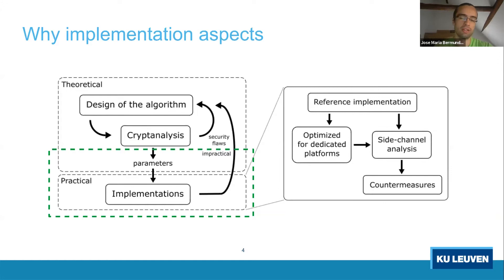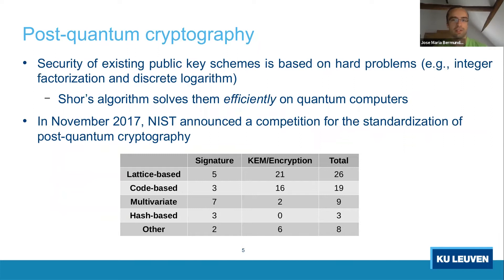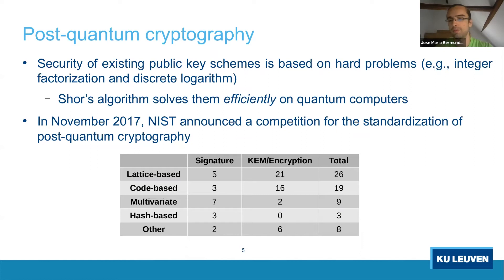Now I will introduce the field of lattice-based cryptography. But first, what is lattice-based cryptography? We have existing public key schemes — RSA, elliptic curve, and digital signatures — that are based on number-theoretical problems such as prime factorization or the discrete logarithm. The problem with these algorithms is that once we have a quantum computer large enough to run Shor's algorithm for the dimensions of these problems, we will be able to break these schemes.